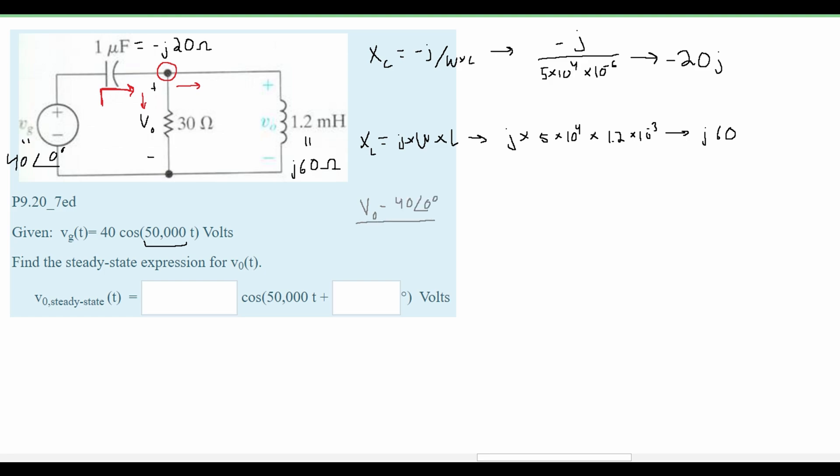And this is all happening over our 1 microfarad or negative j times 20 ohms. From this we're going to have a plus, and then we know that our V₀ is over our 30 ohm resistor. Next we have another V₀ going out of it so it's a plus, and this is over our 1.2 millihenry inductor or j60 ohms. And this is equal to 0.